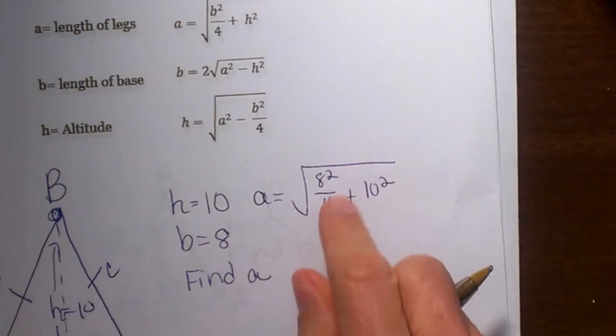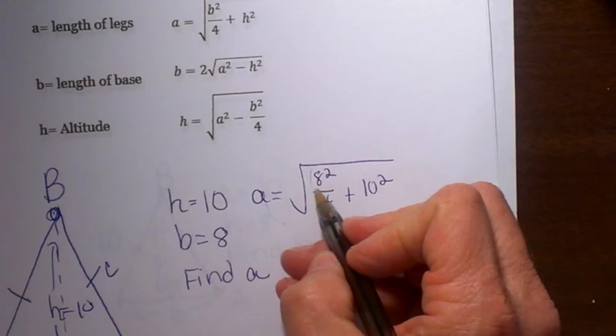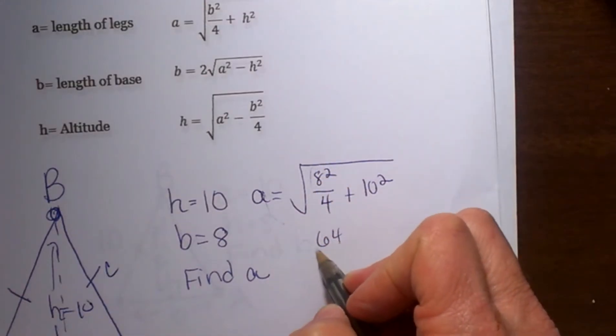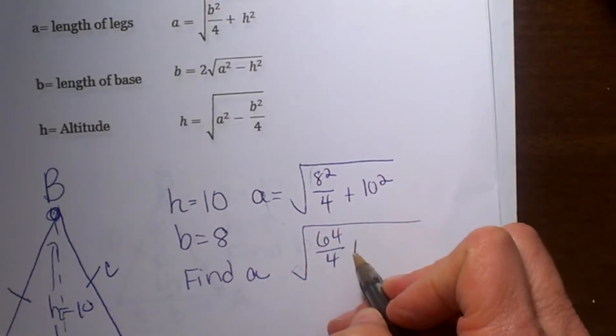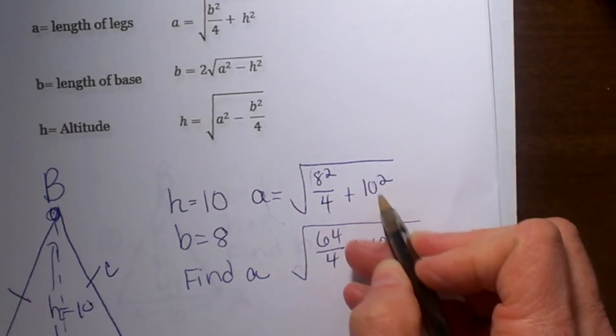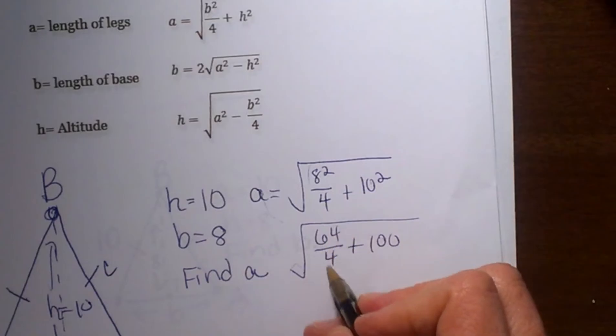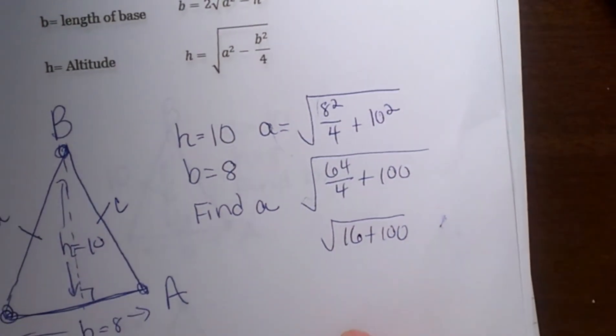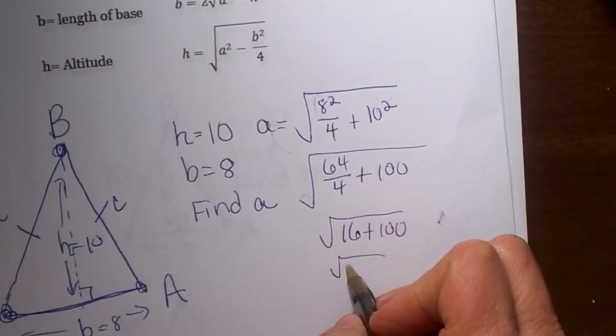Now we just simplify this. 8 squared is 64, so that's 64 over 4 plus 100 for 10 squared. 64 divided by 4 is 16, and 16 plus 100 gives me 116.